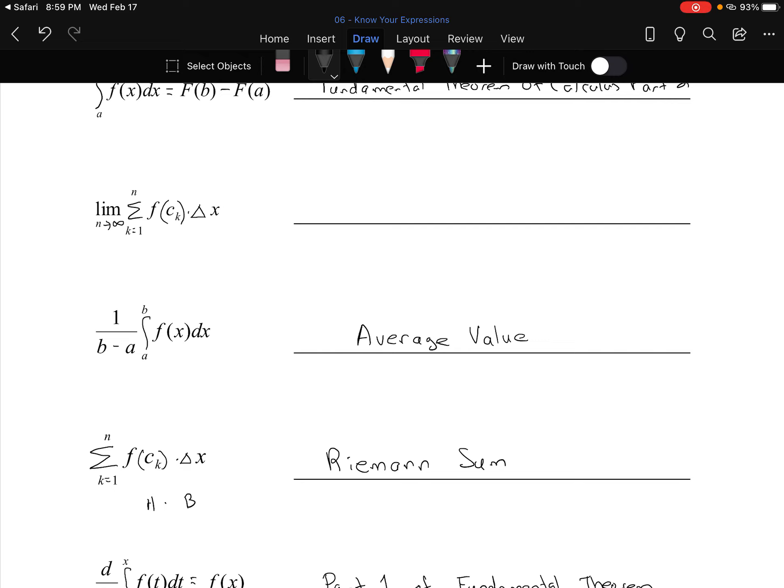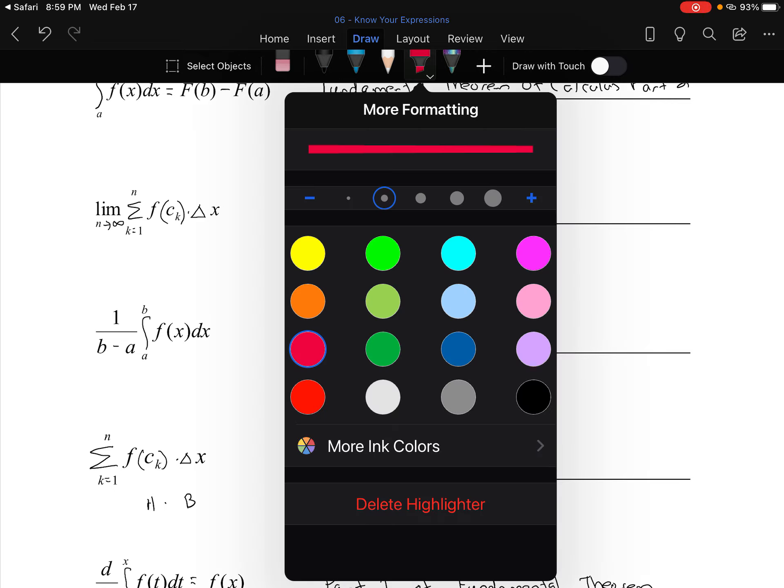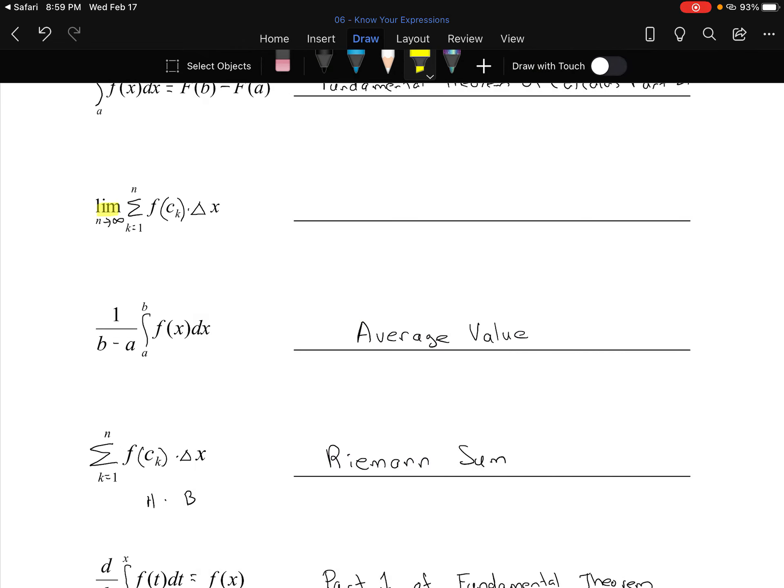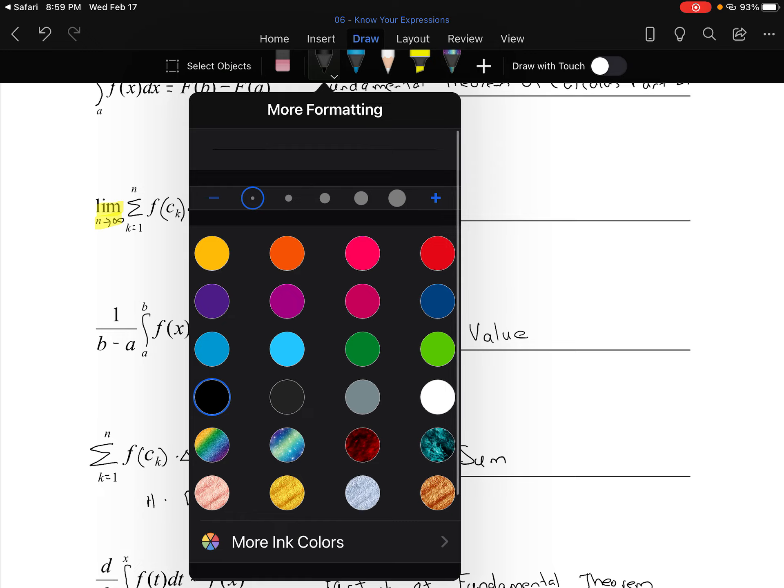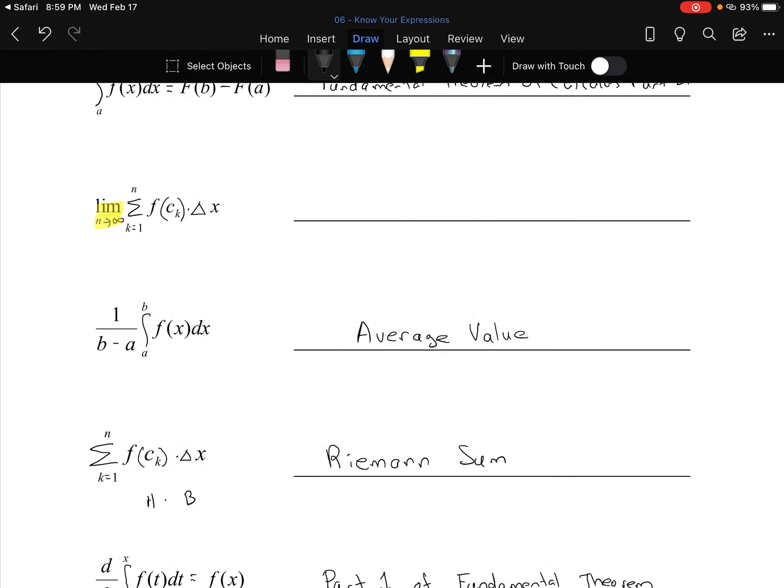The big moment came when we said don't just add them up—take the limit as n goes to infinity. That is, get an infinite number of these rectangles and use limits to evaluate them. And when we did that, instead of calling it a Riemann sum, we called it a definite integral.